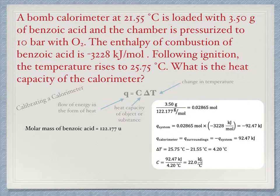Note that I am carrying some extra significant digits through these intermediate calculations. The heat flow associated with the system, then, is 0.02865 moles times minus 3228 kilojoules per mole, which is minus 92.47 kilojoules.